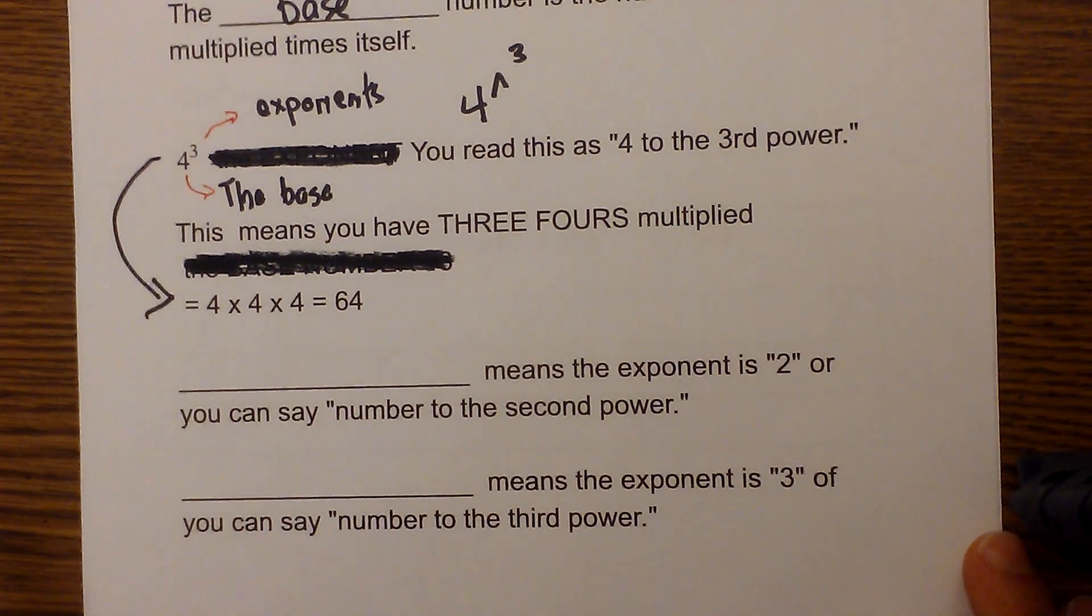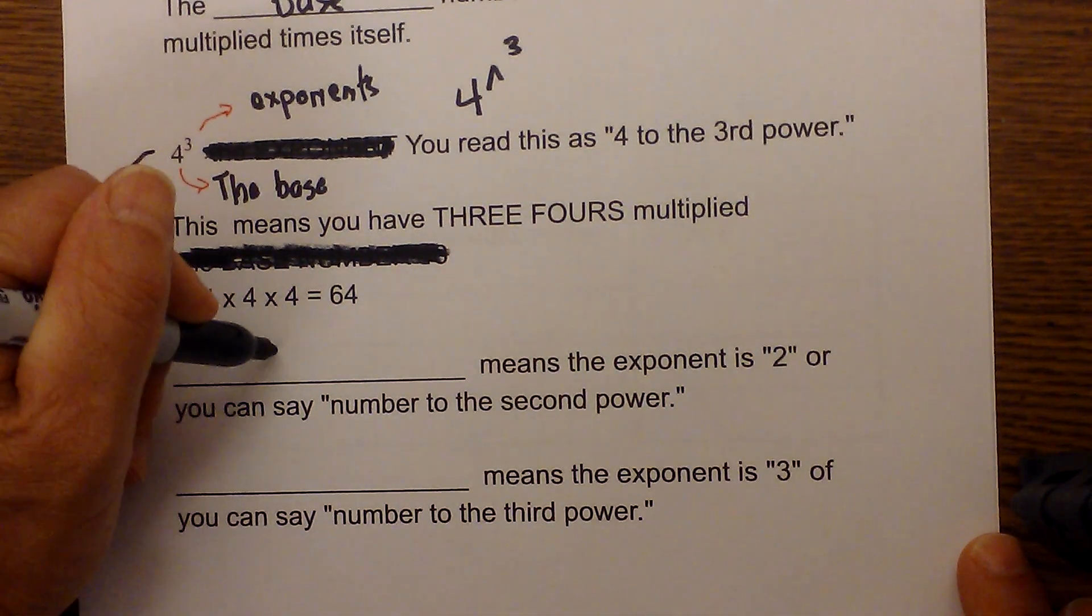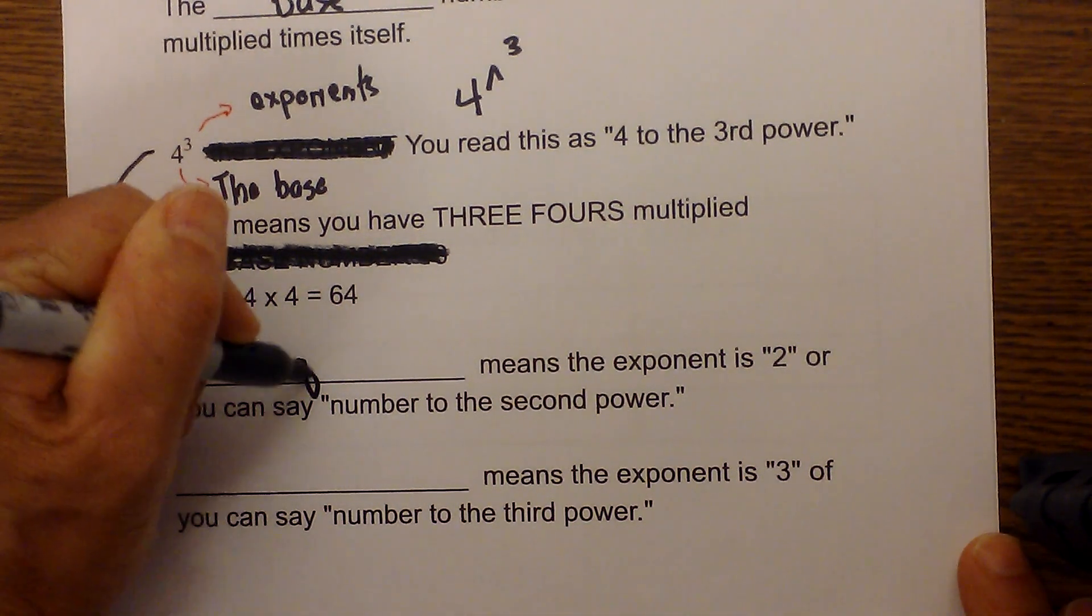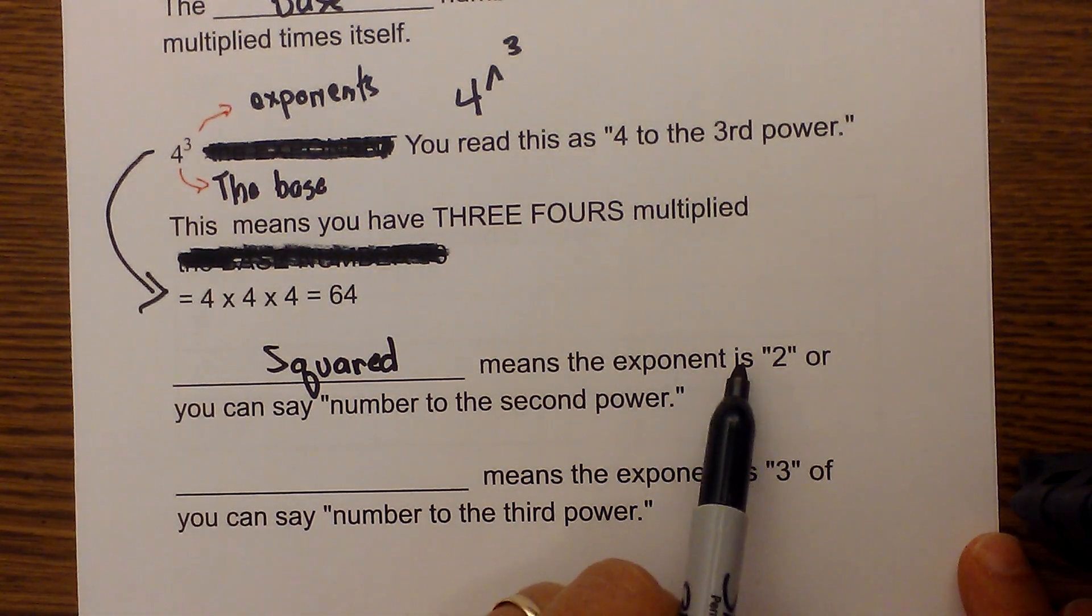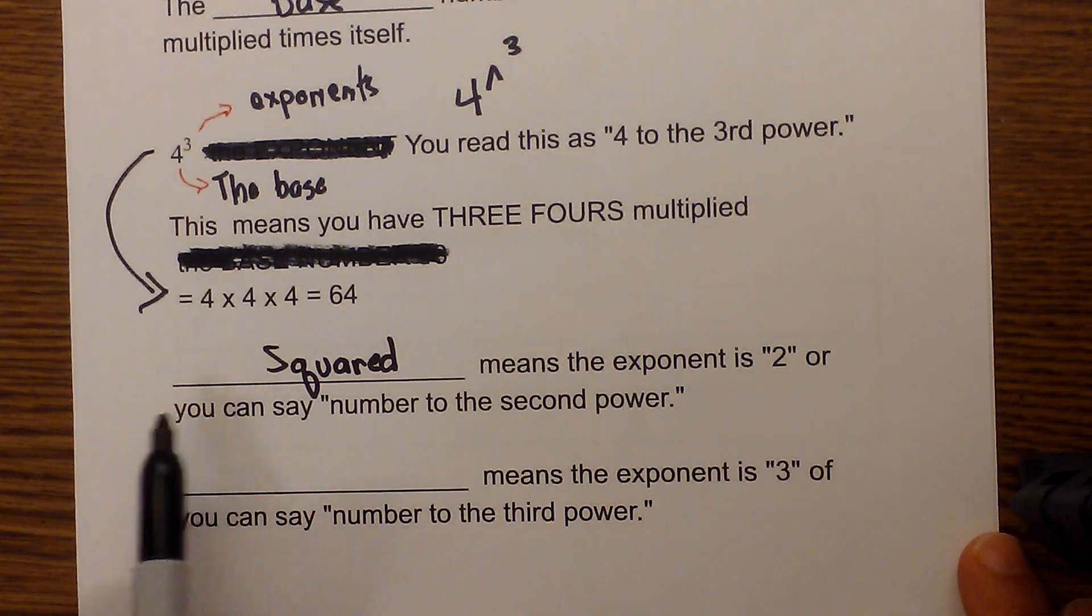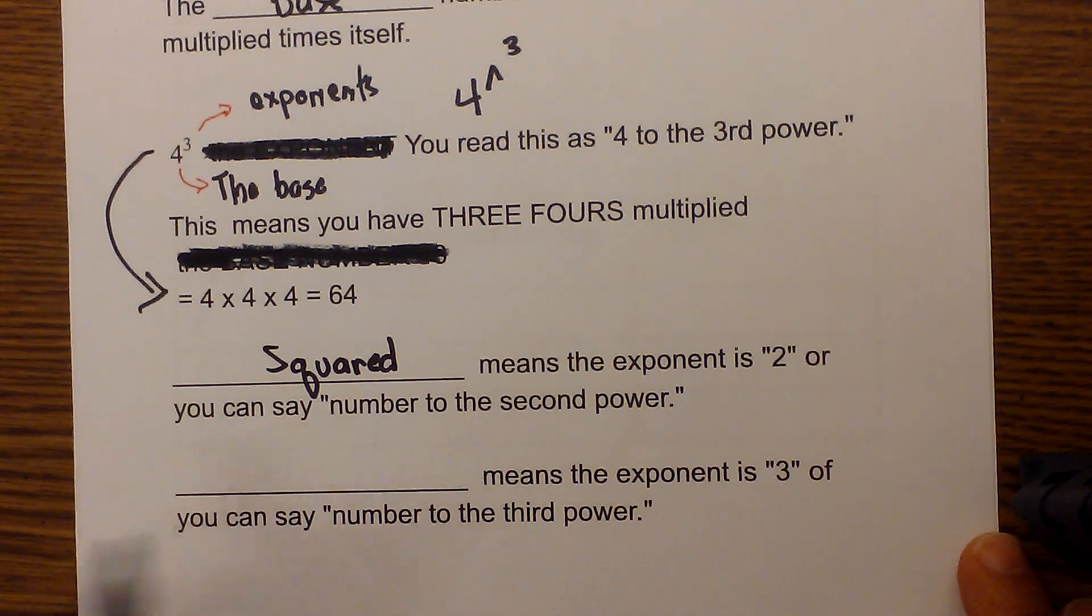Sometimes people talk about shortcuts and they may say something is squared. What that means is that the exponent is 2, or you can say the number is to the 2nd power.